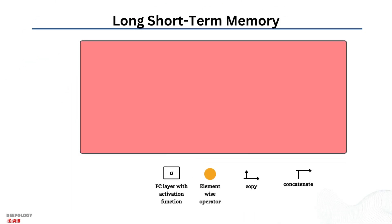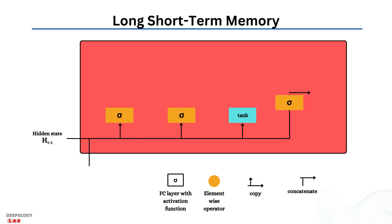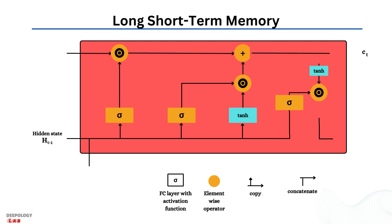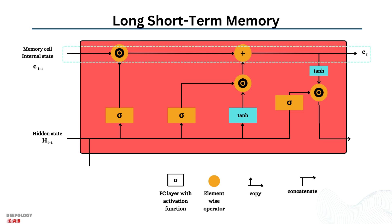Long short-term memory networks, usually just called LSTMs, are a special kind of recurrent neural network specifically designed to handle sequential data. The LSTM model addresses the issue of vanishing gradients in traditional RNNs by introducing memory cells and gates to control the flow of information. LSTMs are widely used in deep learning because they capture long-term dependencies in sequential data, making them well suited for tasks such as speech recognition, language translation, and time series forecasting.